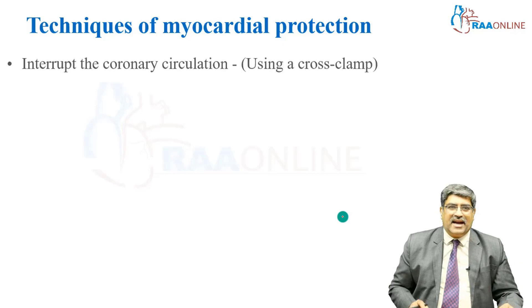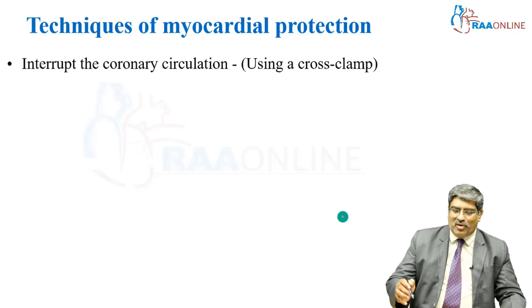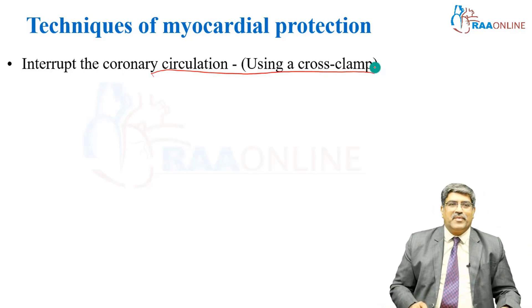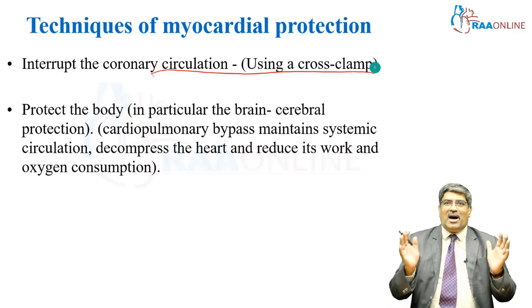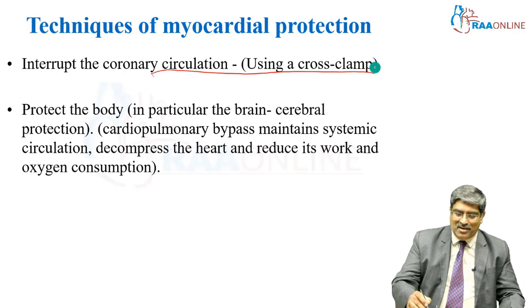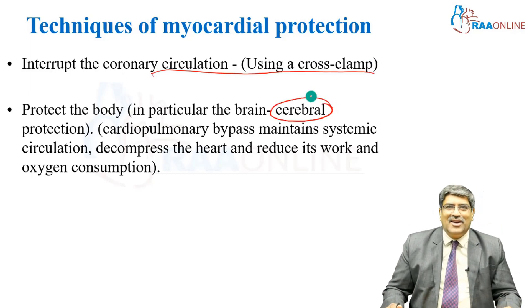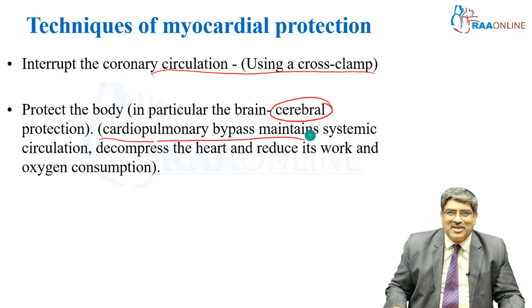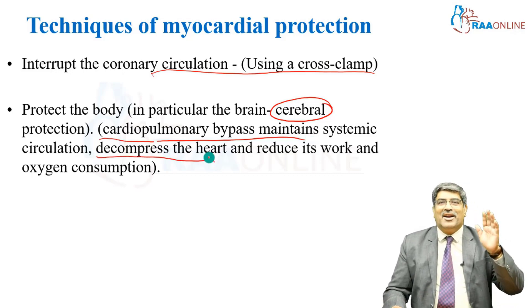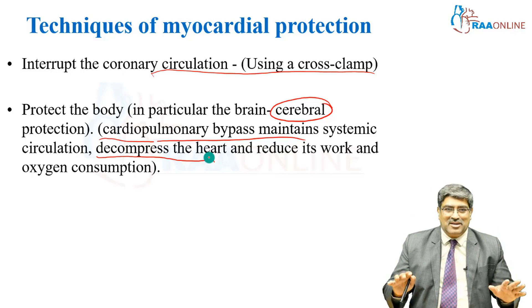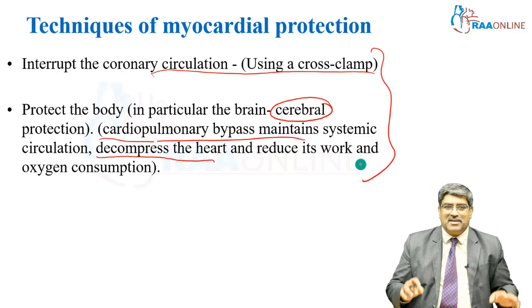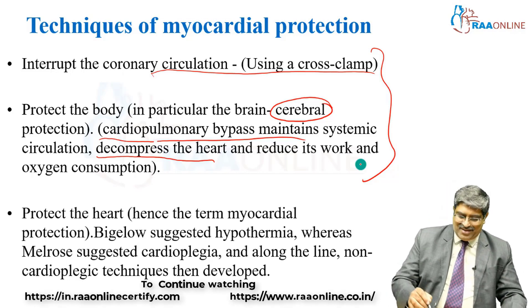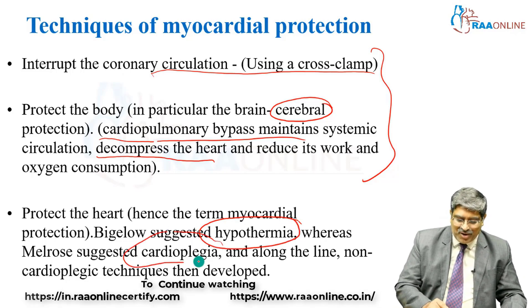The various challenges include: first, interrupting the coronary circulation, which is usually done by placing a cross-clamp across the aorta. Second, protecting the body — particularly the brain and kidneys — while the heart is arrested. Cardiopulmonary bypass maintains systemic circulation, decompresses the heart, and reduces oxygen consumption. The third important part is heart protection itself, which is achieved either by inducing hypothermia or by giving cardioplegia.